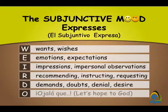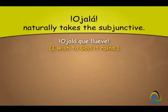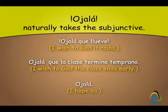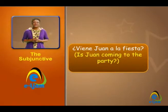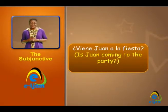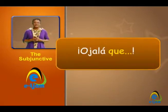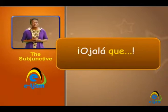And in the O, the expression ojalá naturally takes the subjunctive. Ojalá que llueve — I wish to God it rains. Ojalá que la clase termine temprano — I wish to God the class ends early. Note that ojalá can stand on its own to mean 'I hope so.' For example: ¿Viene Juan a la fiesta? — Is Juan coming to the party? Ojalá — I hope so. But once it is followed by que, we must use the subjunctive.